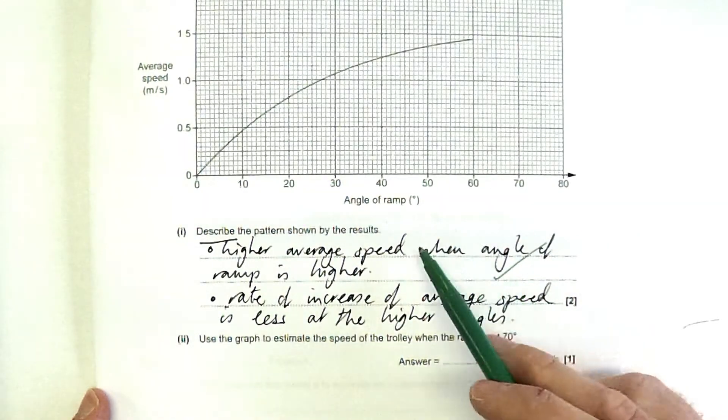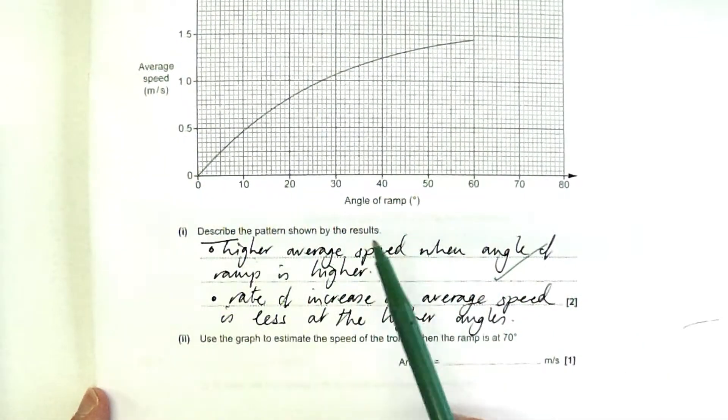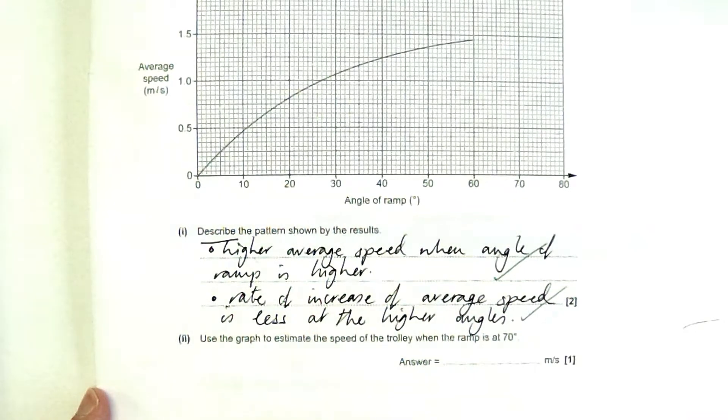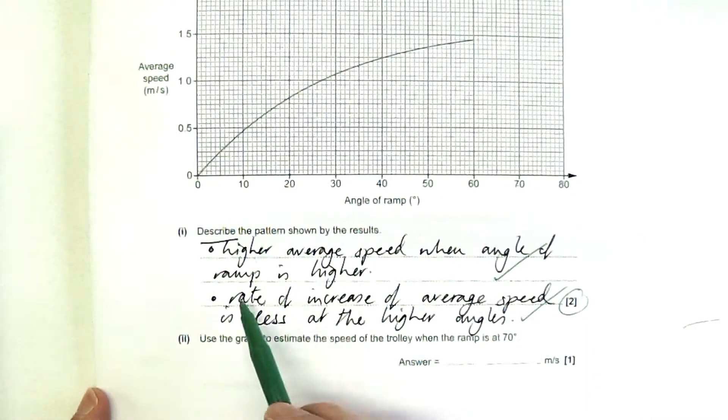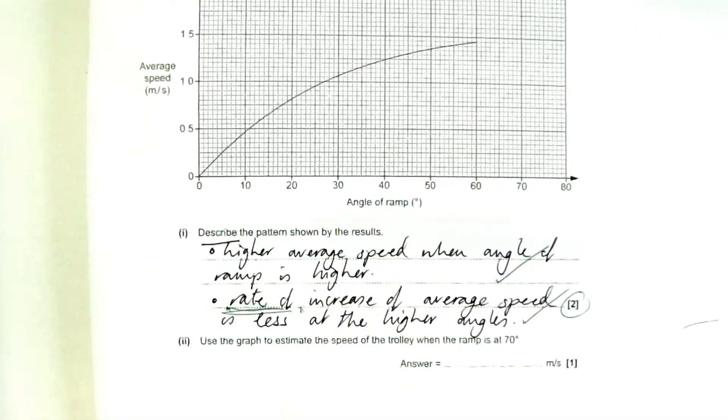Mark for just a statement, higher average speed, higher angles, but a bit more marks, second mark for that detail there. Okay? And look out for these things. Graphs show rates of change.